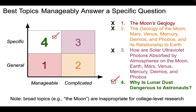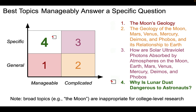The first example is the moon's geology — a very general, very manageable topic. Some students might want to say, hey, I want to study the geology of the moon. The problem is it's too general; it's not specific enough. The one to the right of it is general but the topic is a little too complicated. For example, the geology of the moon, Mars, Venus, Mercury, Mars' moons, and its relationship to the Earth. Remember, your research topic is not a 700-page book — you have to get your point across in about five to ten minutes. Really complicated topics are not a good idea.